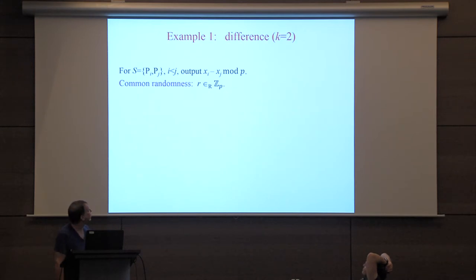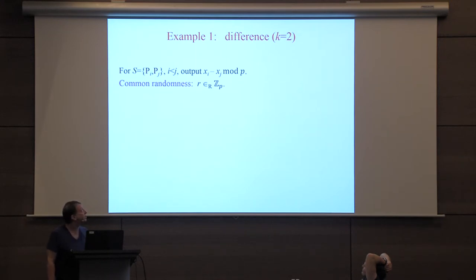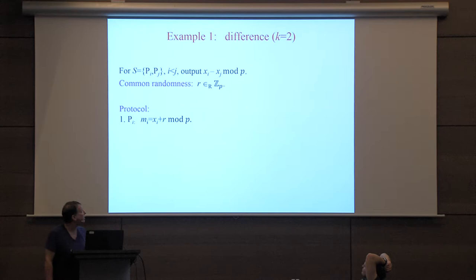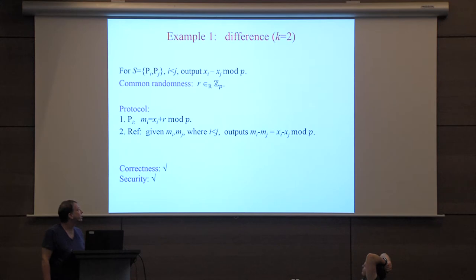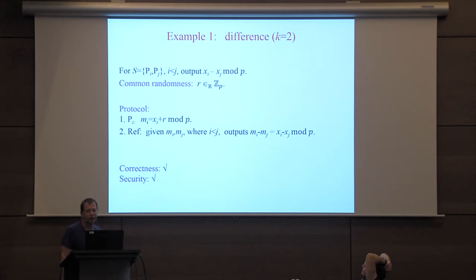I want to give examples of two Ad Hoc PSM protocols. The first is a simple one for the difference function where k equals 2: the referee should learn xi minus xj mod p. The common randomness is a random element r in Fp. Each of the two parties sends xi plus r. The referee computes mi minus mj; the r cancels, so it gets xi minus xj. For security, the referee gets two elements whose difference is the output, so its view can be simulated from the function output.